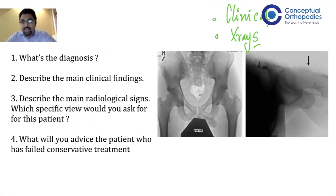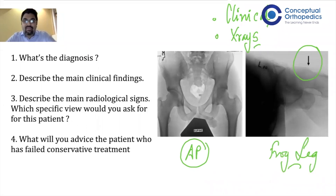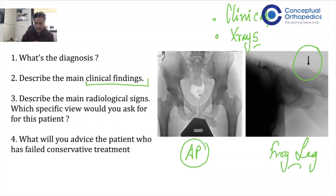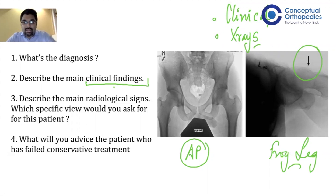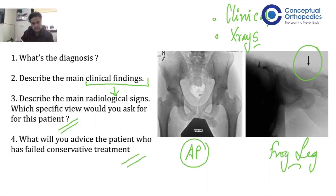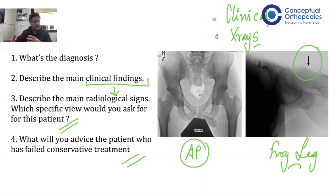A pointer has been placed on the relevant radiological finding. Question one asks for the diagnosis, given an AP and lateral view. Question two asks you to describe the main clinical findings on the x-ray. Question three asks you to describe the radiological signs and what specific view you would request. Question four is about treatment — if the patient fails conservative treatment, what are the surgical options?